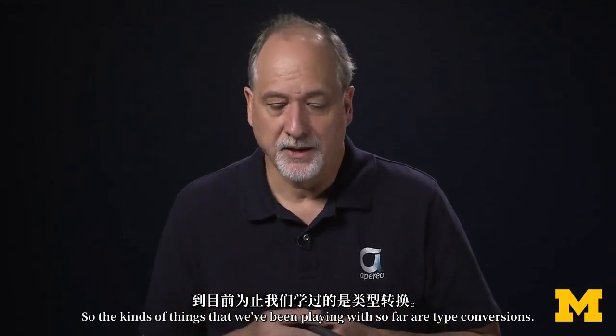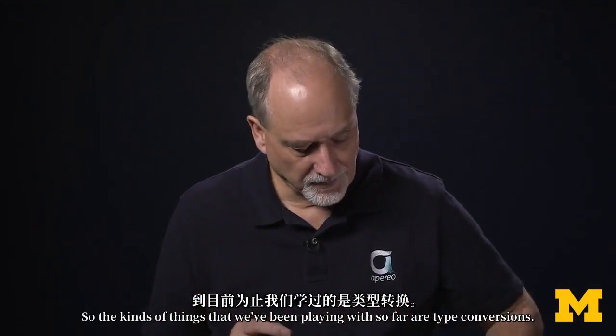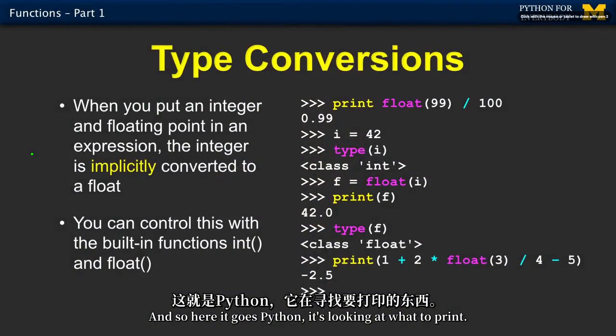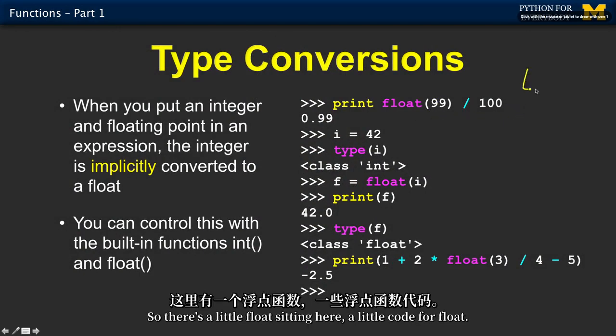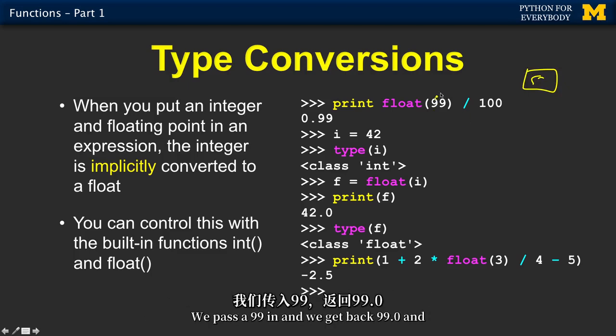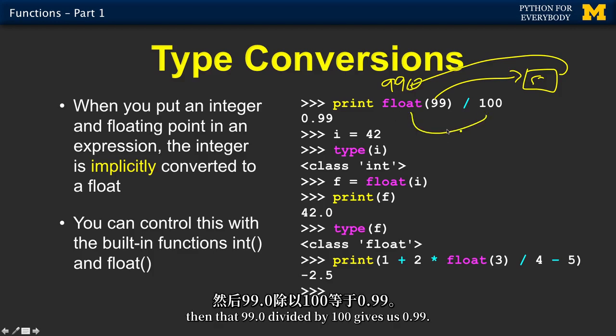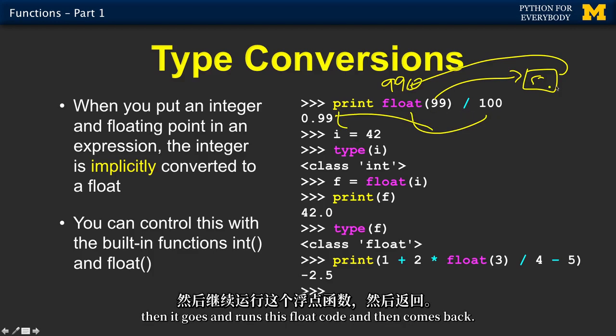So the kinds of things that we've been playing with so far are type conversions. And so here goes Python. It's looking at what to print. It's like, I got an expression here. But wait a second. I'm going to do this. But wait. I got to call a function. So there's a little float sitting out here. A little code for float. We pass a 99 in. And we get back 99.0. And then that 99.0 divided by 100 gives us 0.99. So it sort of pauses its calculation. And then it goes and runs this float code. And then comes back.